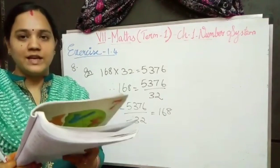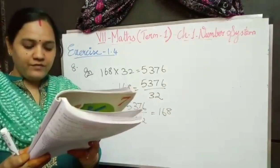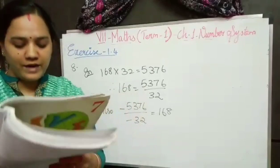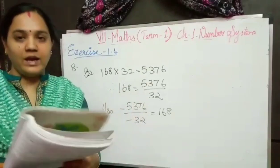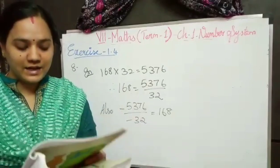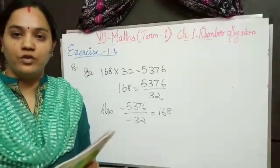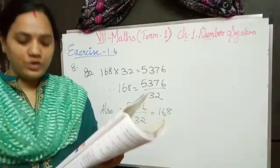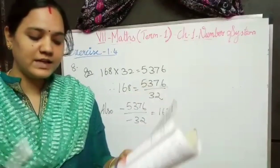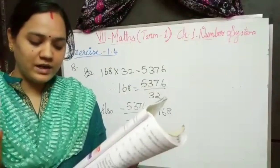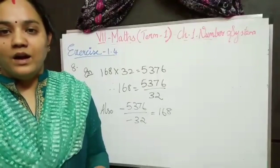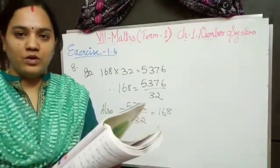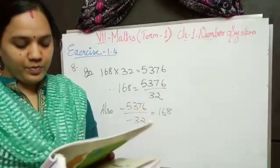Seventh problem: a person lost 4800 calories in 30 days. If the calorie loss is uniform, calculate the loss per day. Using the same method as the fifth problem, we divide 4800 by 30 to find the daily calorie reduction. You can try this one on your own.